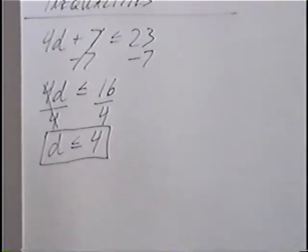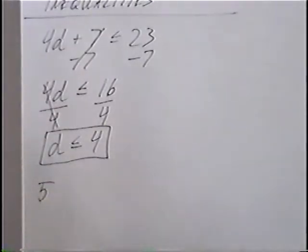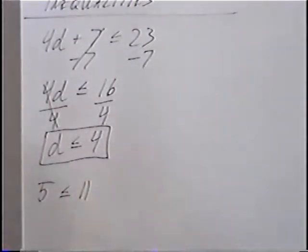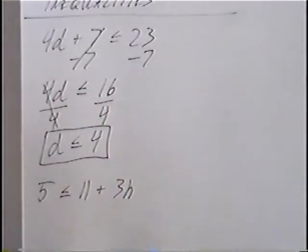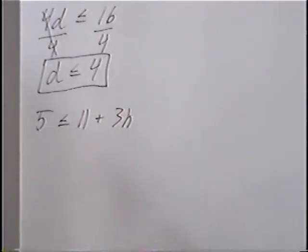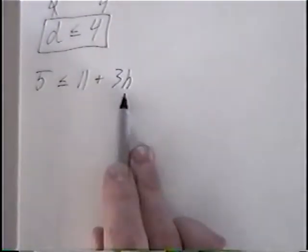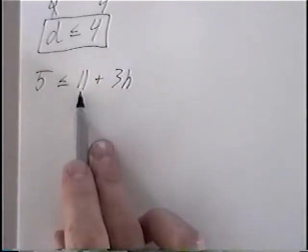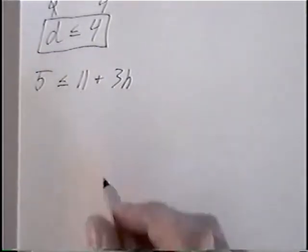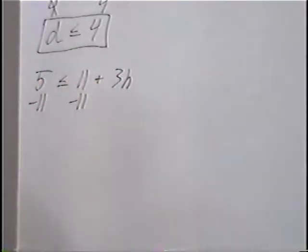The second and last question for the section: we have 5 is less than or equal to 11 plus 3h. Again, we want to solve for h. So the first step would be to get rid of this positive 11. To do that we can subtract 11 on both sides.